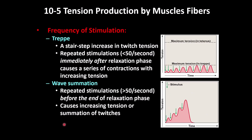Treppe occurs when the stimulus is less than 50 per second. The stimulus causes an increase in tension, then the muscle goes back to relaxation, then increases again. Each time there is some increase in tension because not all calcium can re-enter the sarcoplasmic reticulum, so tension builds slightly, though overall the tension remains quite low.